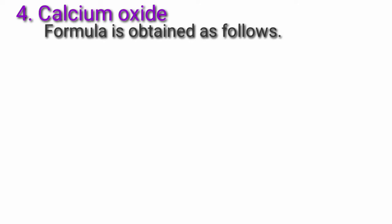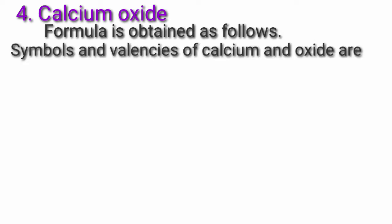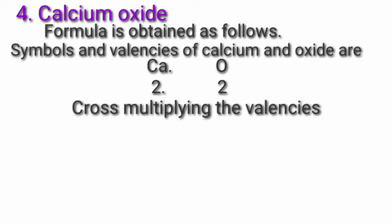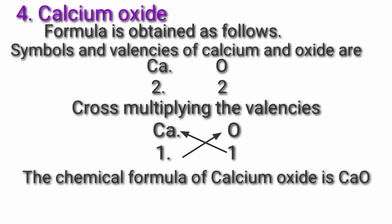Fourth, calcium oxide. Formula is obtained as follows. Symbols and valencies of calcium and oxide — valency of Ca: 2, valency of O: 2. Dividing by common factor, we get 1. Cross multiplying — Ca multiplied by 1, O multiplied by 1. Therefore, the chemical formula of calcium oxide is CaO.